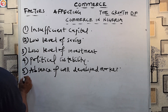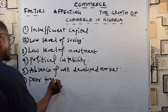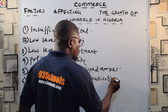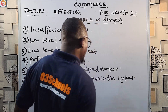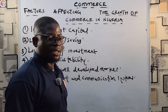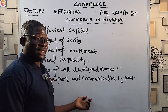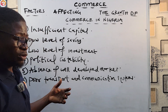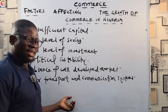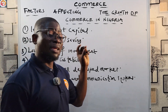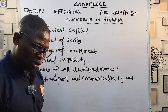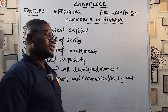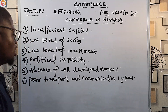Number six is poor transport and communication systems. Although there is improvement and we are getting better, this is still affecting the growth of commerce in Nigeria. When a farmer has produce but cannot transport it from where it was produced to the final consumer, the goods spoil. For example, people coming from the north with tomatoes — because of bad roads, they spend days on the highway and a lot of the goods perish. This is a major factor affecting the growth of commerce in Nigeria.